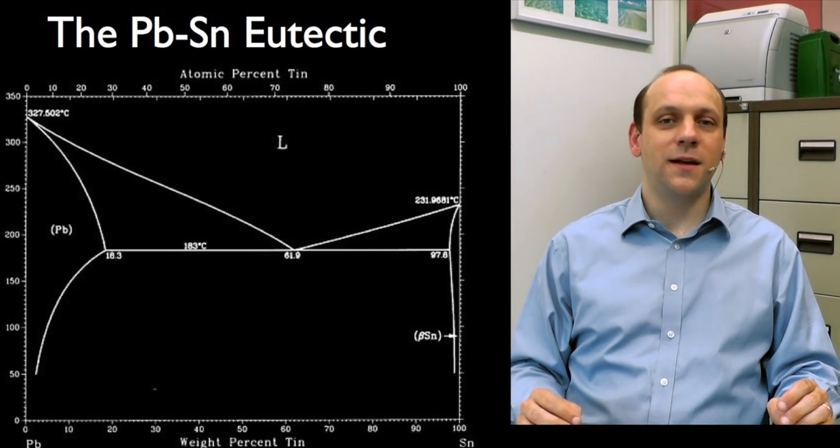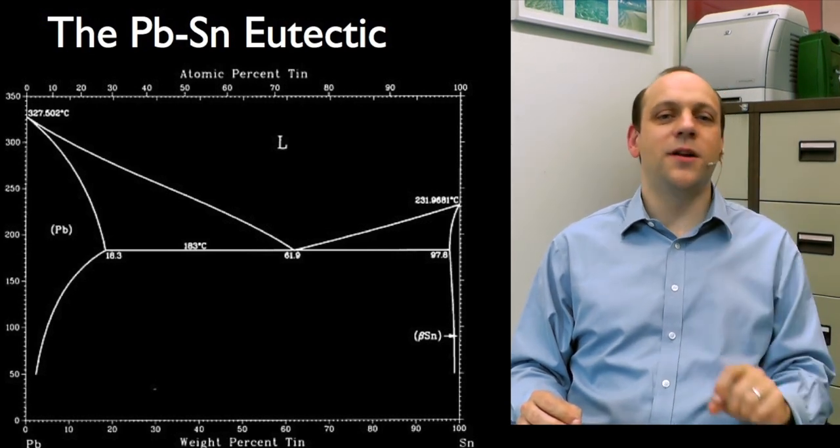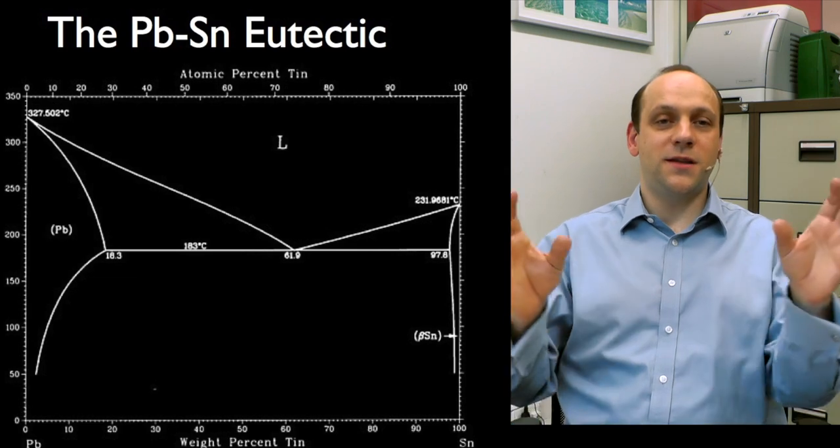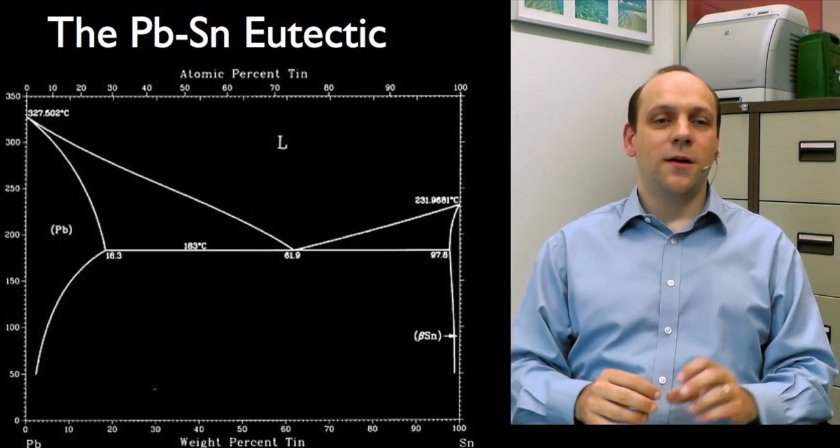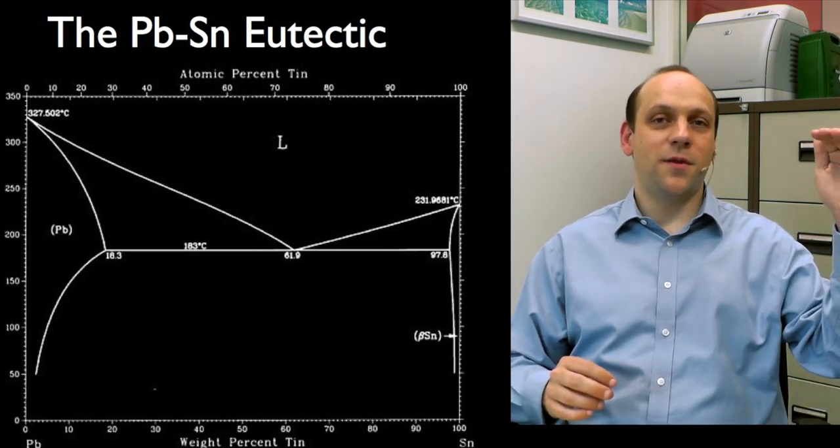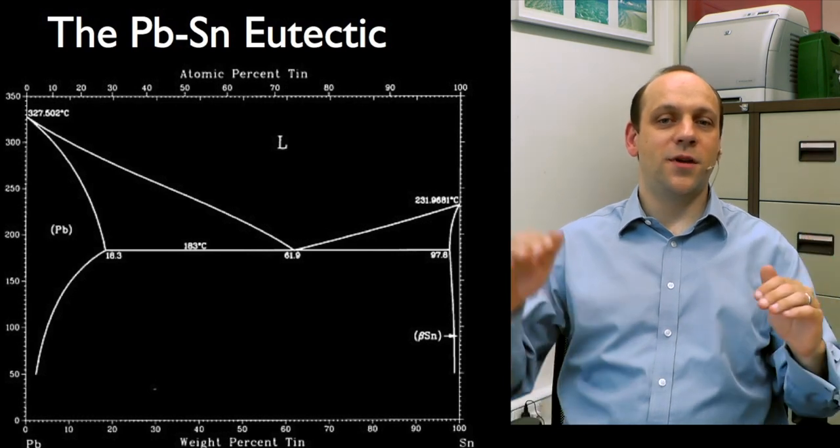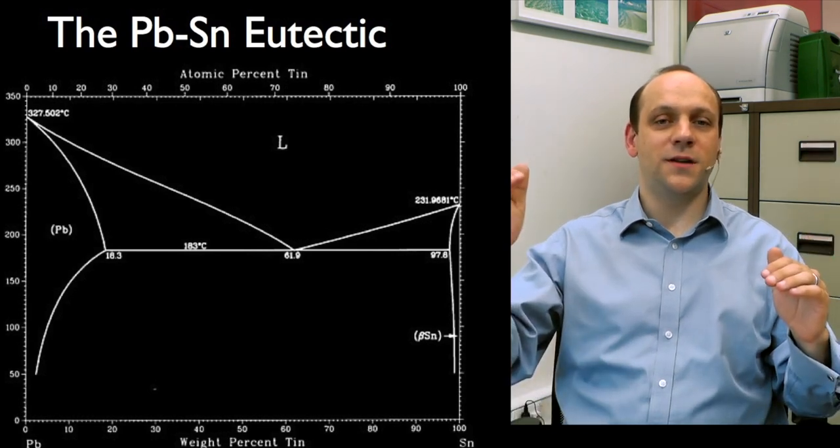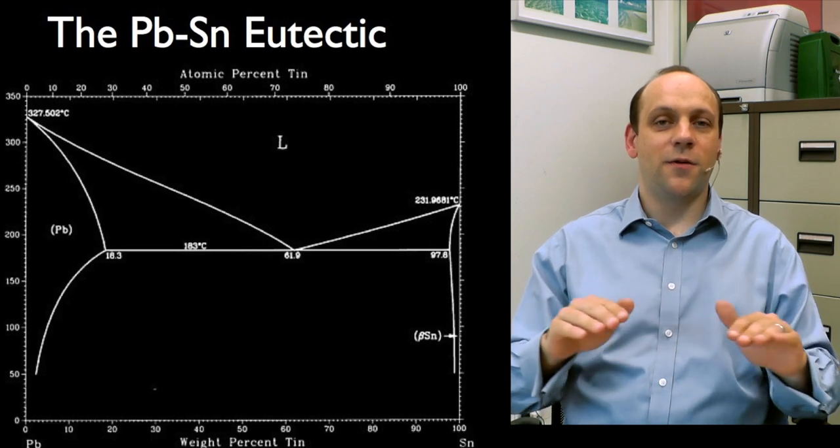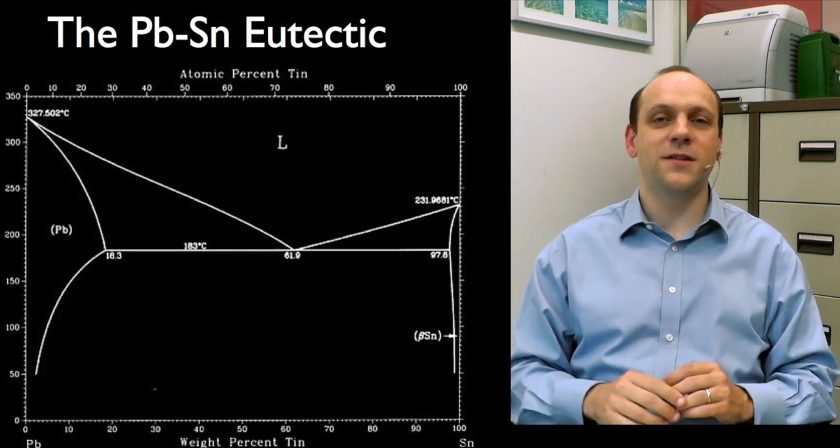Pure tin, beta-tin, that has very little bit of solubility for lead in it. Between the two there's a big deep eutectic. So pure lead, that solidifies up at 327 degrees C. Pure tin is at 231 degrees C. And then the eutectic itself is down at quite a low temperature, 180 something degrees C.